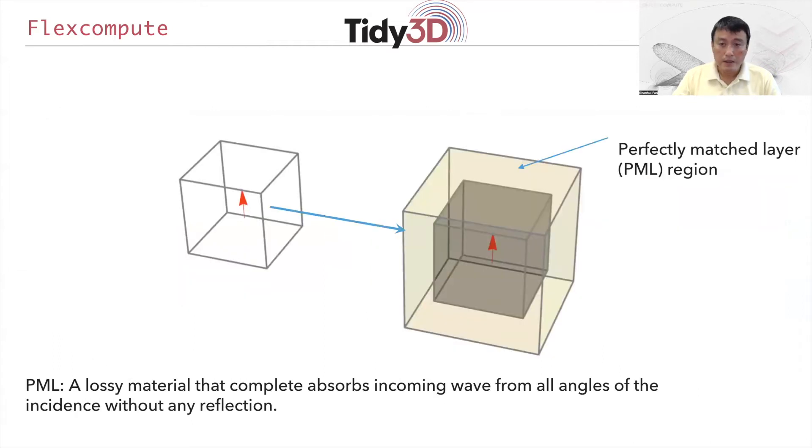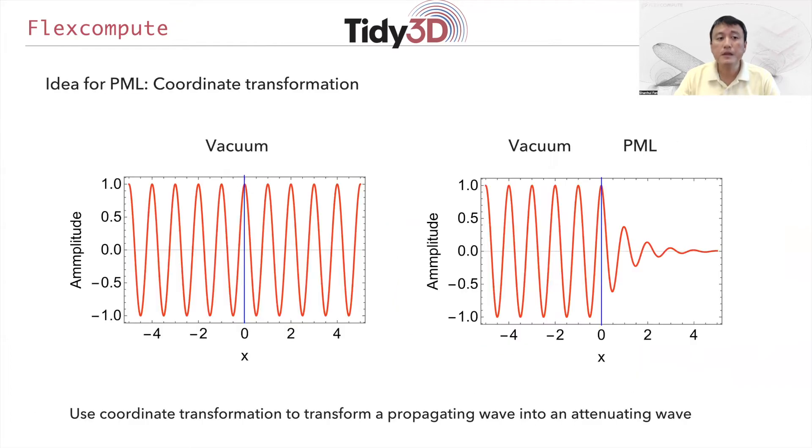The idea in standard finite difference time domain simulation is to take the computational domain and then surround it by a special lossy material called perfectly matched layer to absorb incoming waves from all angles of incidence without any reflection. It is perhaps useful to go through some of the basic ideas behind this PML concept.